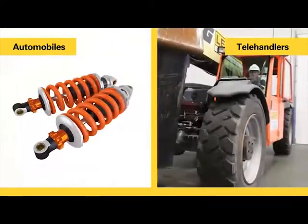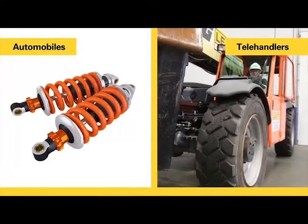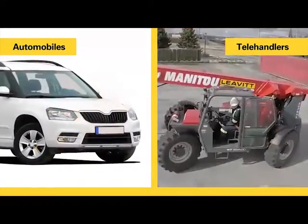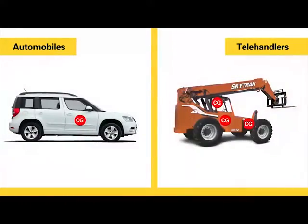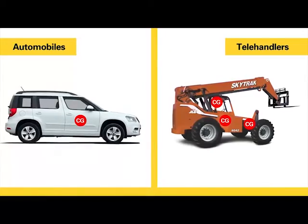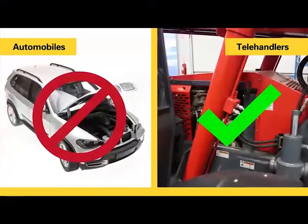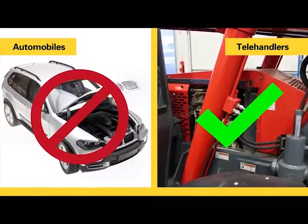Telehandlers, on the other hand, have: a suspension system provided by their tires; various steering modes; a center of gravity that varies by load and boom position; and a hydraulic lift system with controls.